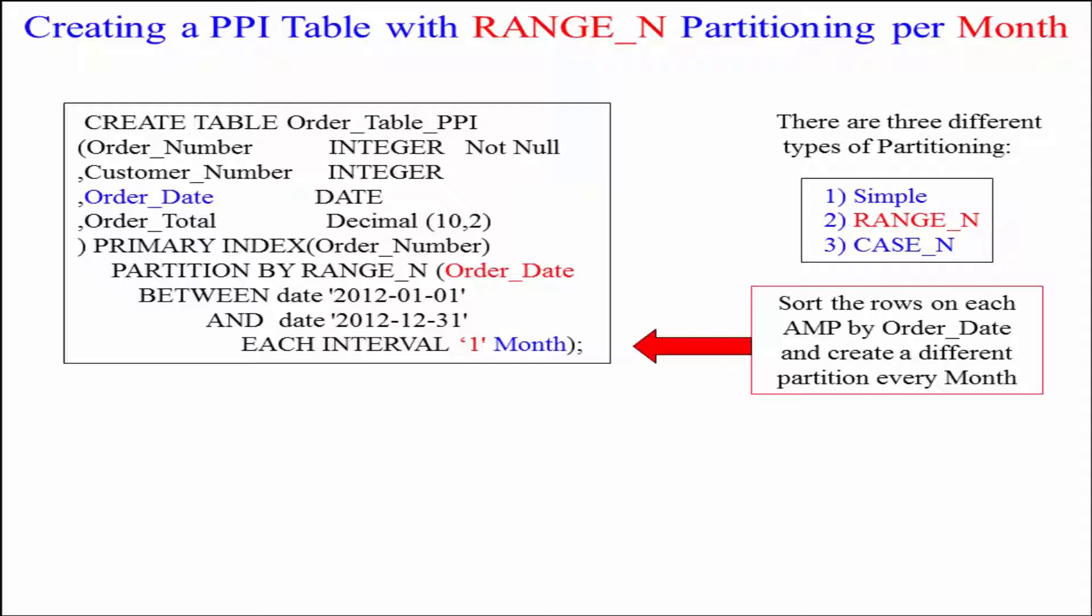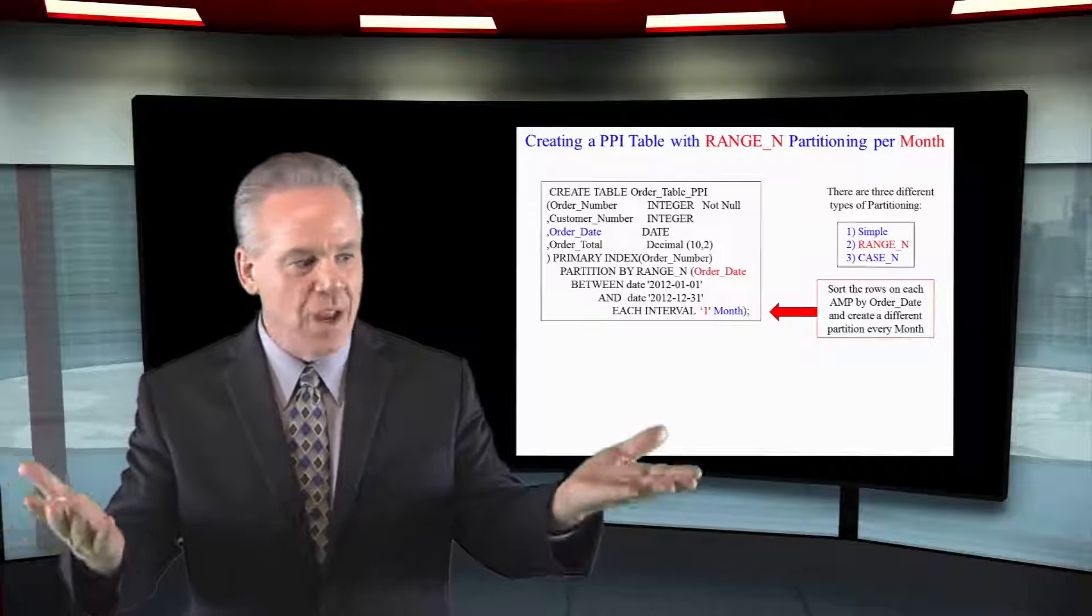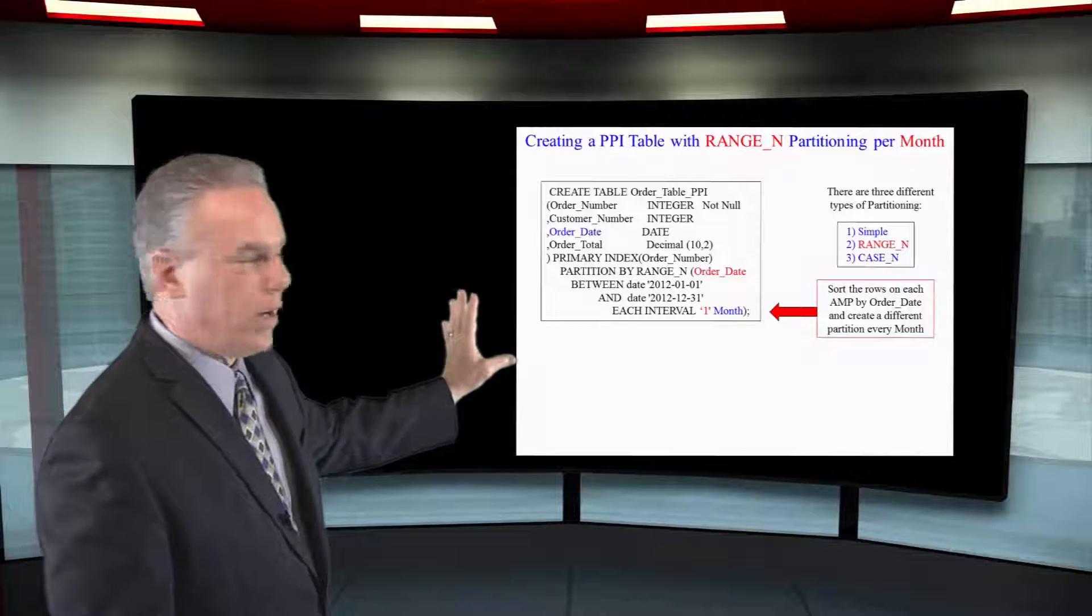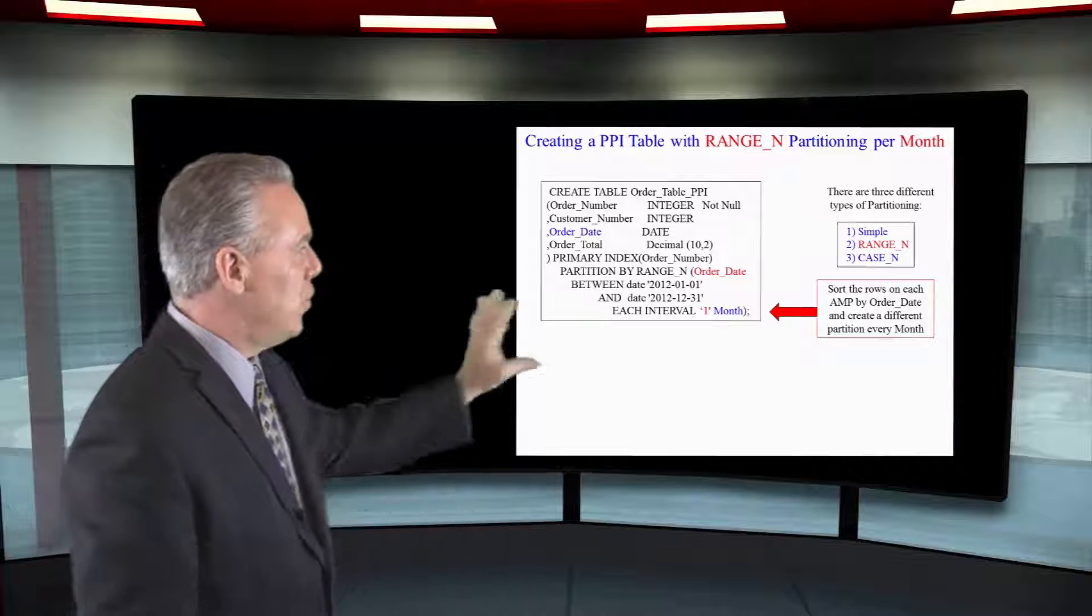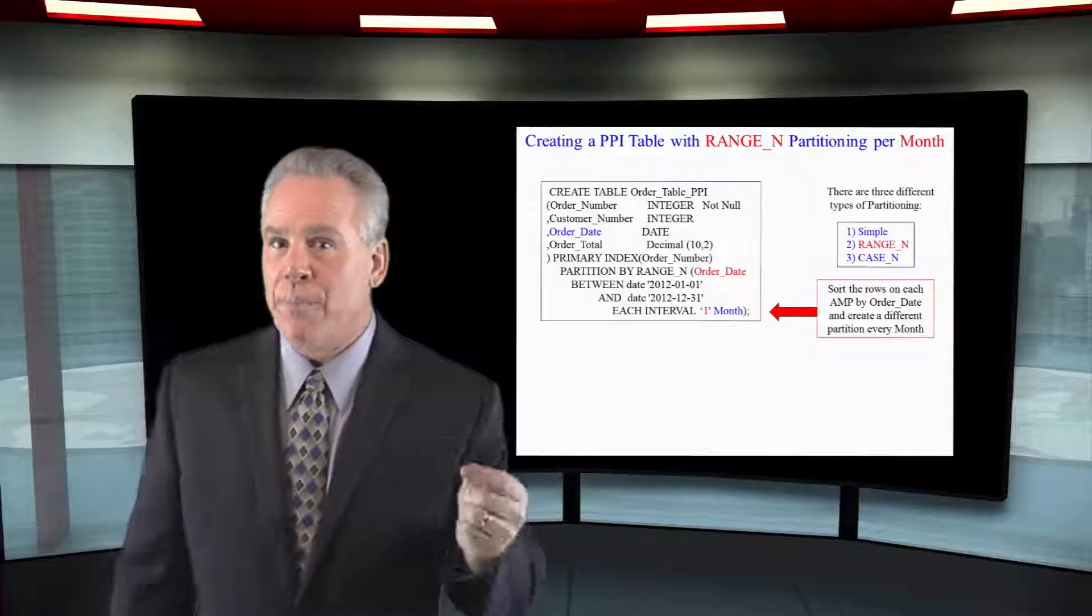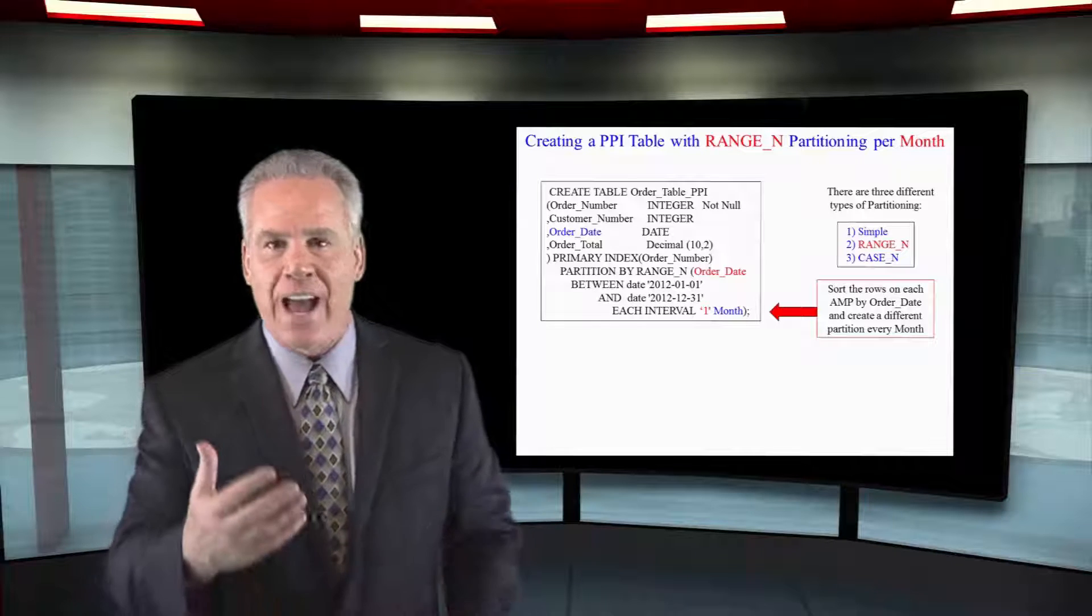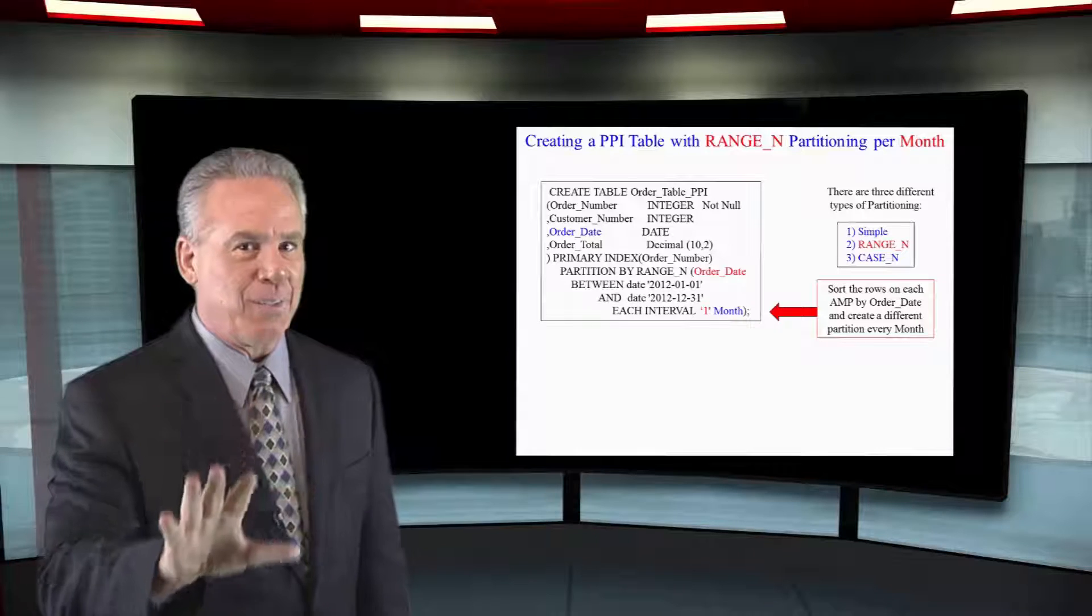Primary index is on order number. That's how the data will be distributed to the proper AMP. But when each AMP gets that, it says we're going to have one year of data because I have a RANGE_N on order date between 2012-01 and 2012-December 31st, each interval one month. And I will show you exactly how that's going to look in our next picture.